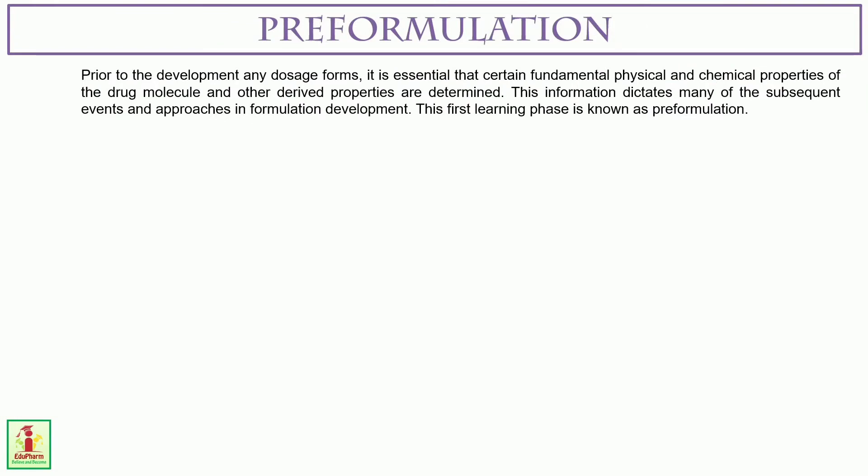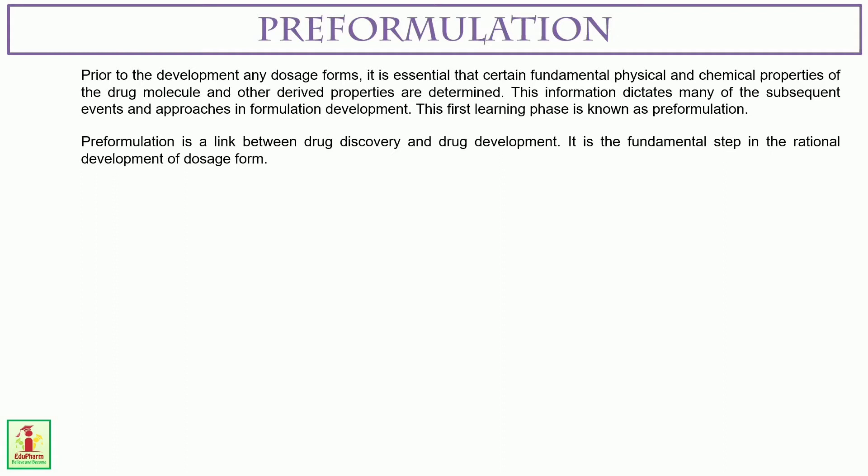Prior to the development of any dosage forms, it is essential that certain fundamental physical and chemical properties of the drug molecule and other derived properties are determined. This information dictates many of the subsequent events and approaches in formulation development. This first learning phase is known as pre-formulation. Pre-formulation is a link between drug discovery and drug development — it is the fundamental step in the rational development of a dosage form.